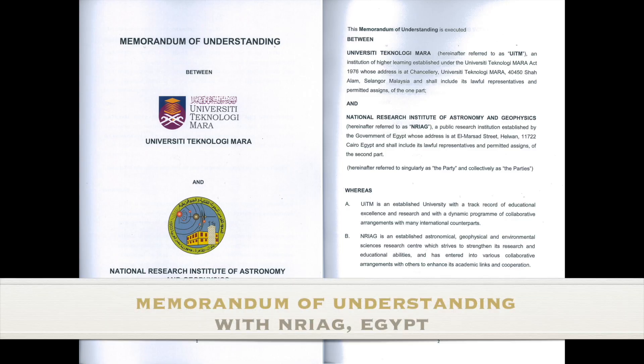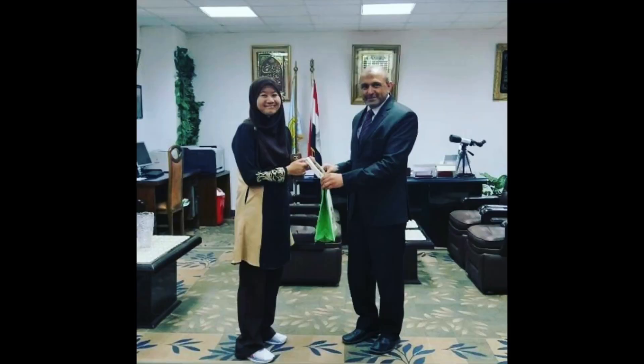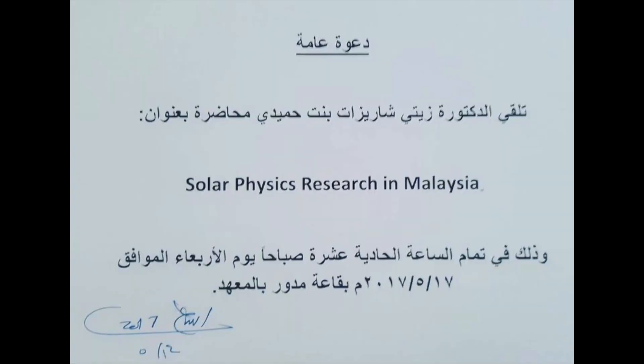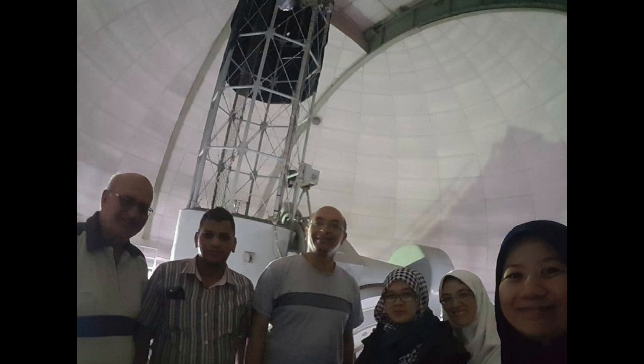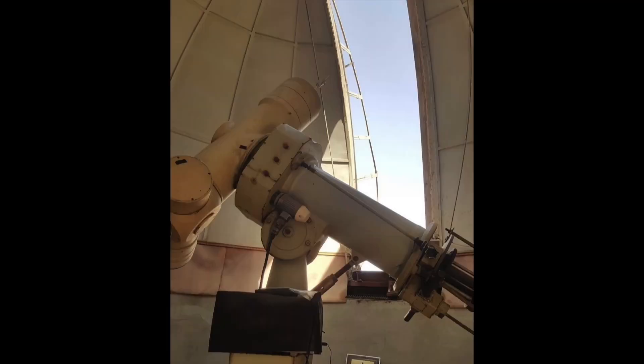A Memorandum of Understanding has also been signed between UiTM and the National Research Institute of Astronomy and Geophysics. It is an international collaboration, as this institute is also involved in the eCalisto Network. The NRIAG has a very long history of astronomical and geophysical observation and has been recognized as one of the World Heritage Sites in Science and Technology.